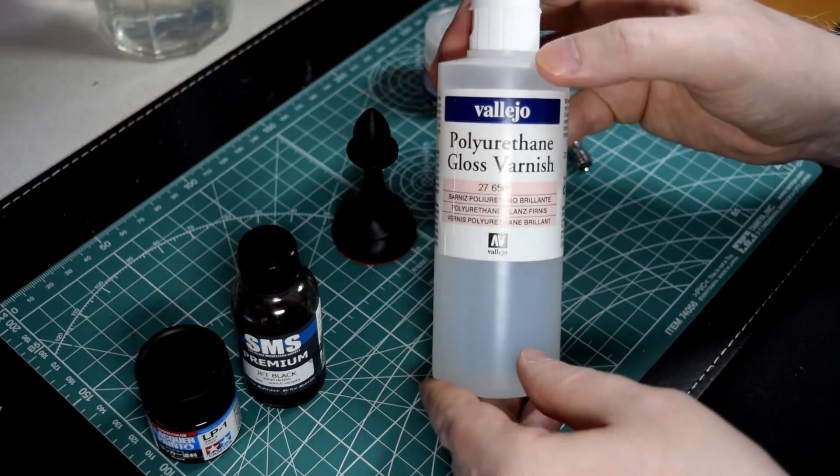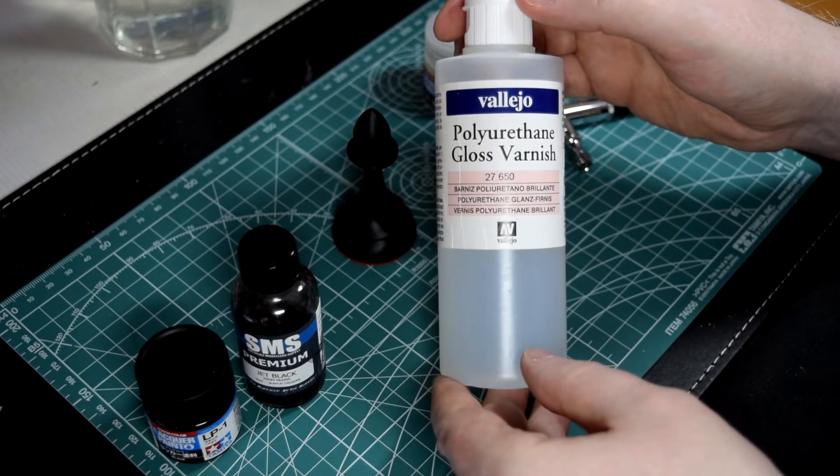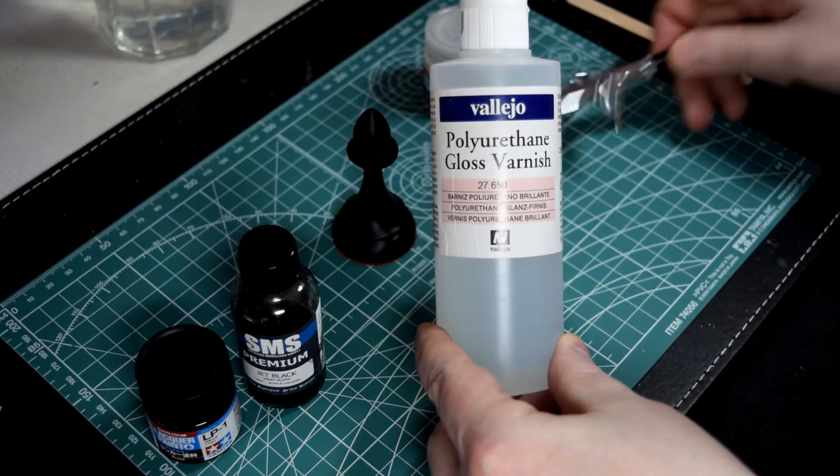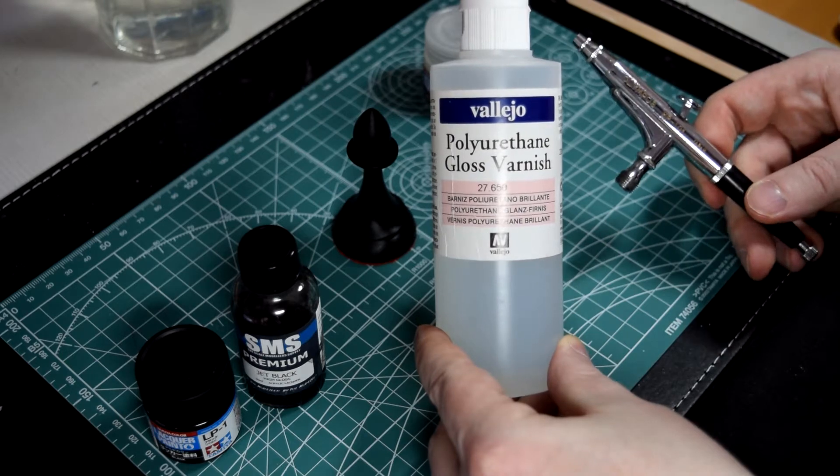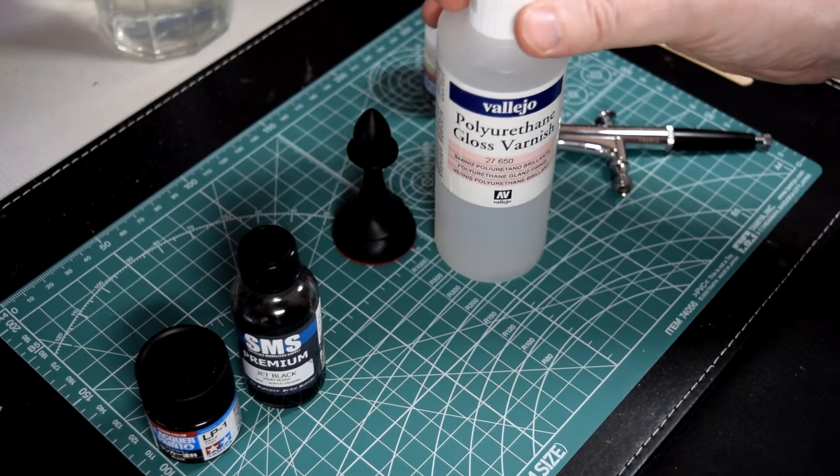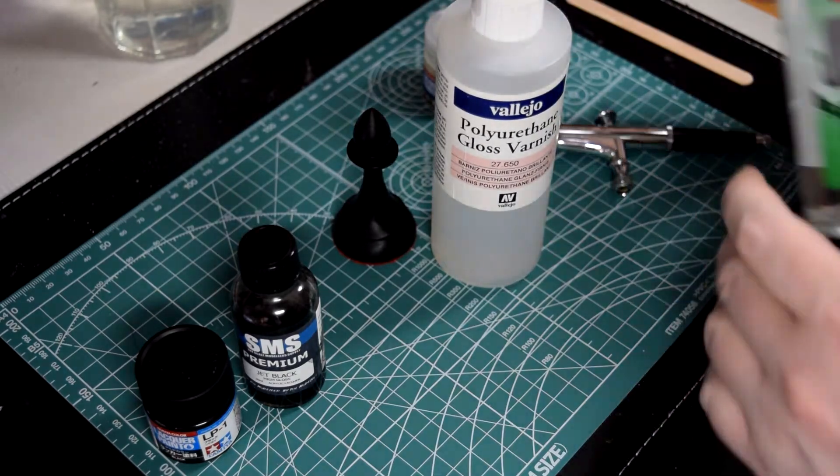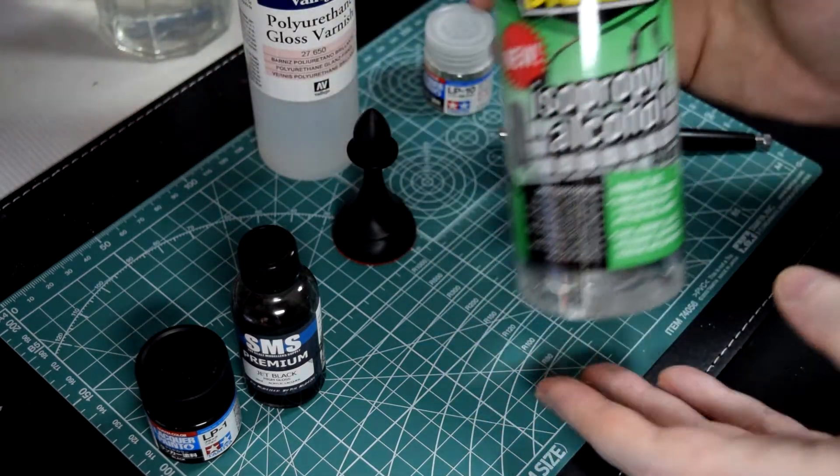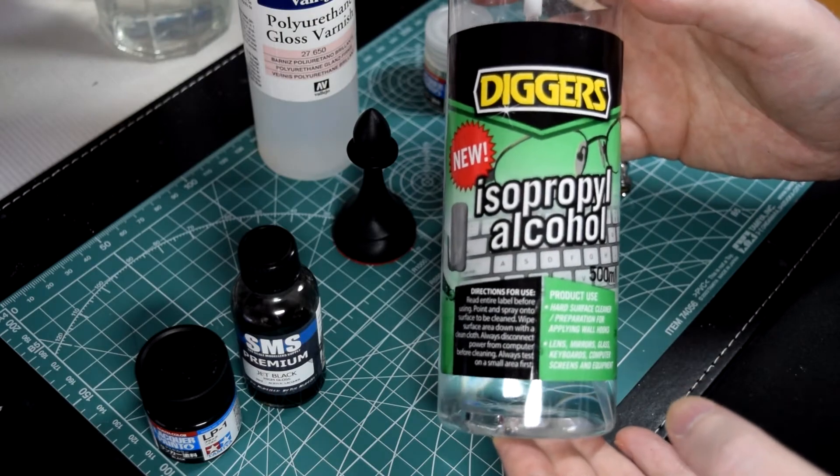After painting, you'll want to seal the paint with varnish, and I use this polyurethane gloss varnish from Vallejo. You can spray this through the airbrush. It is a little bit thick. If you want to thin it so that it sprays more easily, you should thin it with isopropyl alcohol. This is the same isopropyl alcohol that you use to wash your 3D prints with.